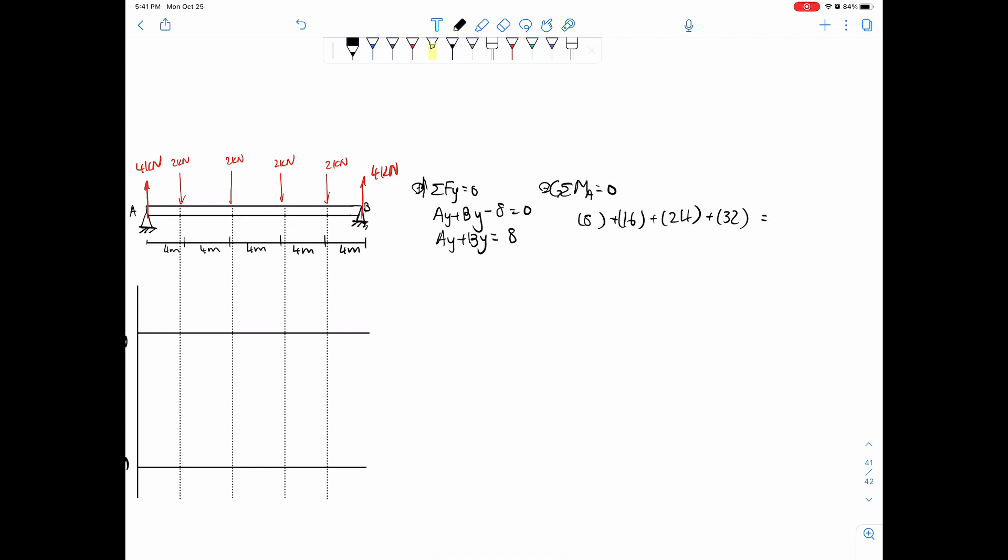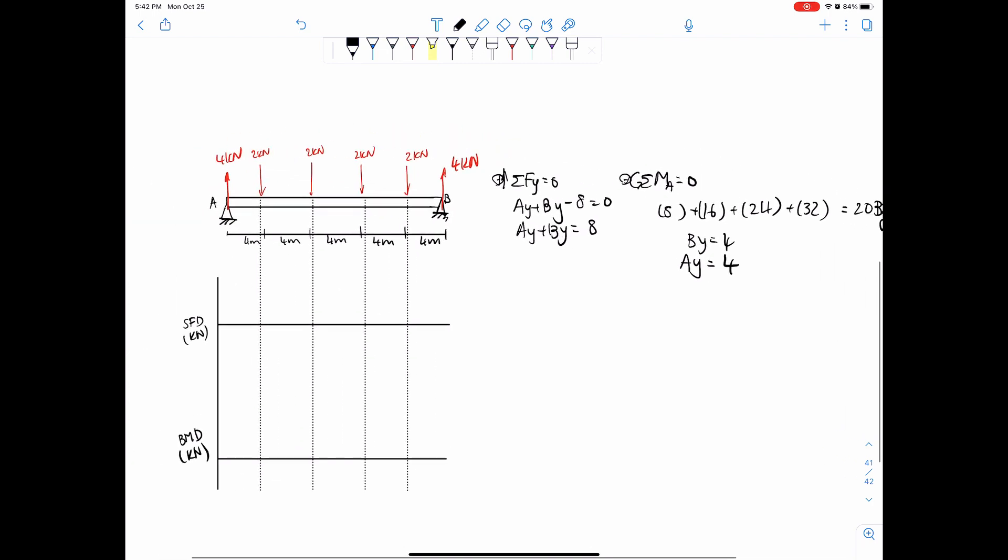And then finally By times twenty equals the sum, and you get By equals four and Ay also equals four. So that's how you get it quickly, but you can also just look at it, see it's symmetrical, and call it a day.